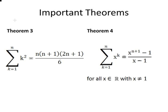Two more complex theorems this time. The summation of k squared, where k increments from 1 to n, and x to the power of k, again when k increments from 1 to n. There's a special condition attached to theorem 4 that n cannot equal 1. It doesn't work in that case.